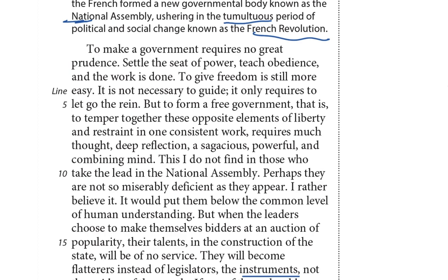Now we're going to do step three from our strategy: tackle the passage in big chunks. First paragraph: 'To make a government requires no great prudence. Settle the seat of power, teach obedience, and the work is done. To give freedom is still more easy. It is not necessary to guide, it only requires to let go of the rein.' But — and I always underline words like 'but' — 'to form a free government requires much thought, deep reflection, a sagacious, powerful, and combining mind. This I do not find in those who take the lead in the National Assembly.' Burke is not impressed — I'm going to put some minus signs here.